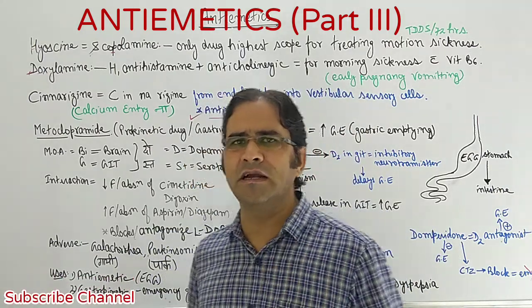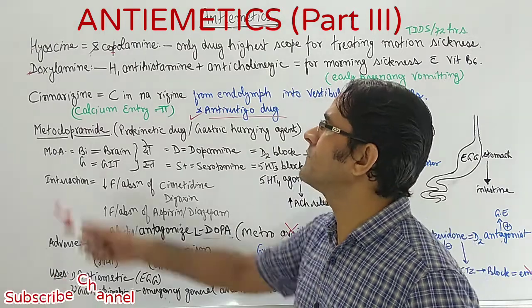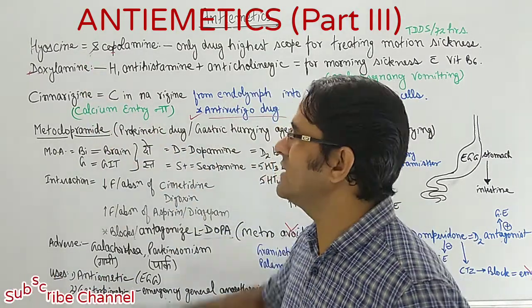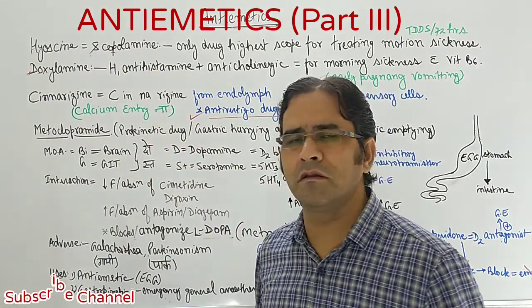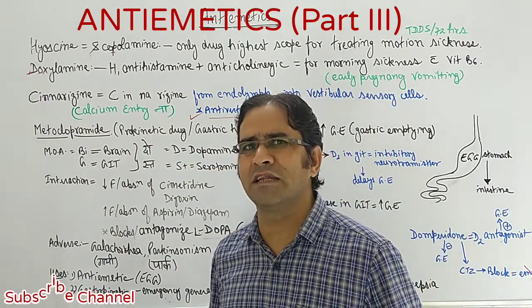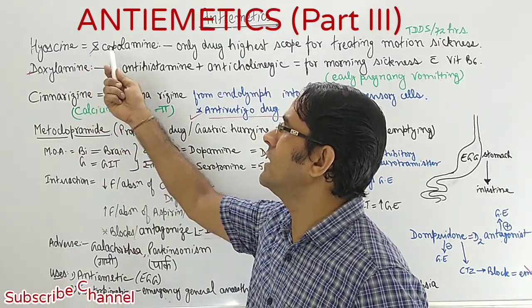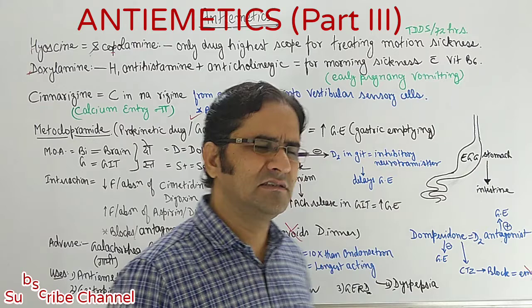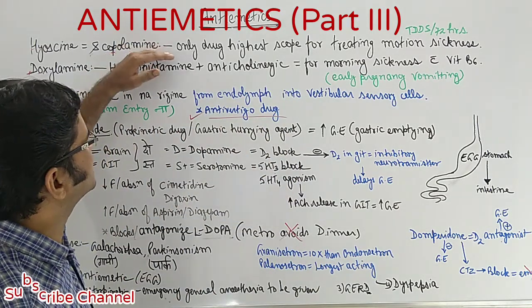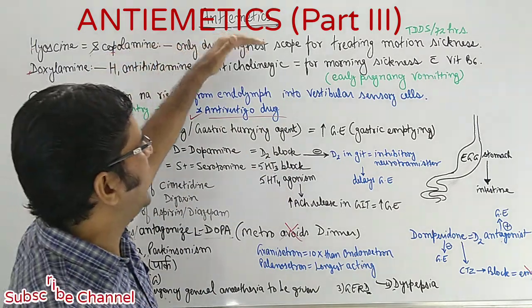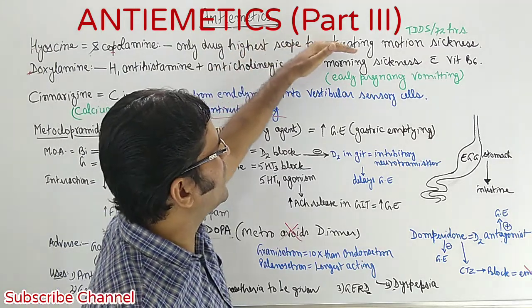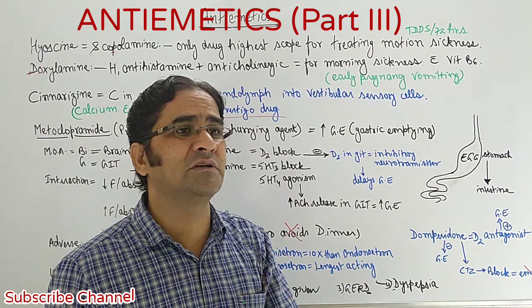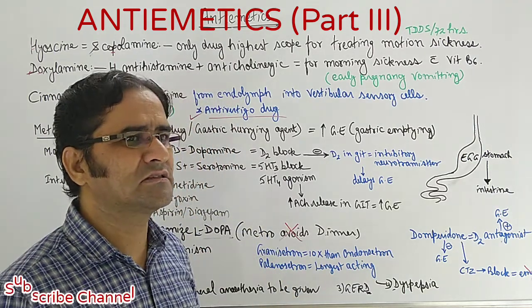Let us start one by one. Hyoscine - another name is scopolamine. Why the name scopolamine? See the word, it contains 'scope.' What kind of scope does this drug have? Yes, this is the only drug having highest scope for treatment of motion sickness.